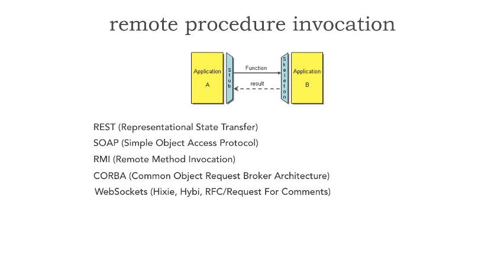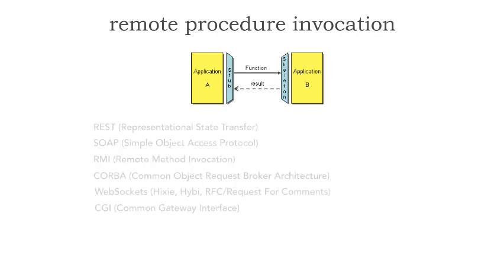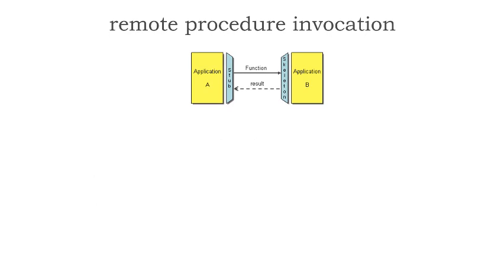We have RFC, which is request for comments, CGI, common gateway interface. Another one I would add to this list, especially recently, is gRPC, Google's remote procedure call, which sits on top of protocol buffers and HTTP/2 persistent connection. That would also be a great example of remote procedure invocation. So we've got this whole list of ways to connect and communicate with another application.